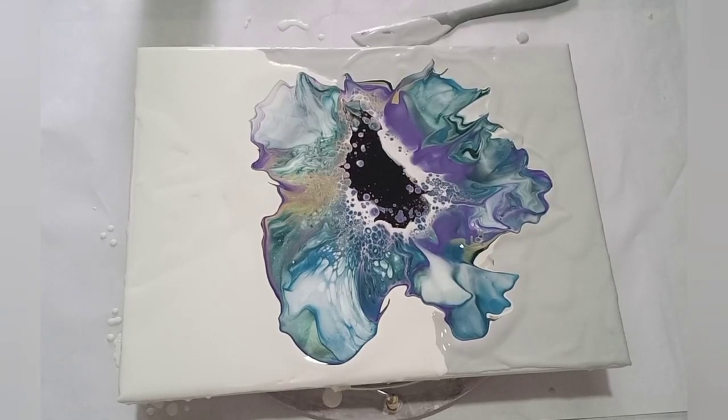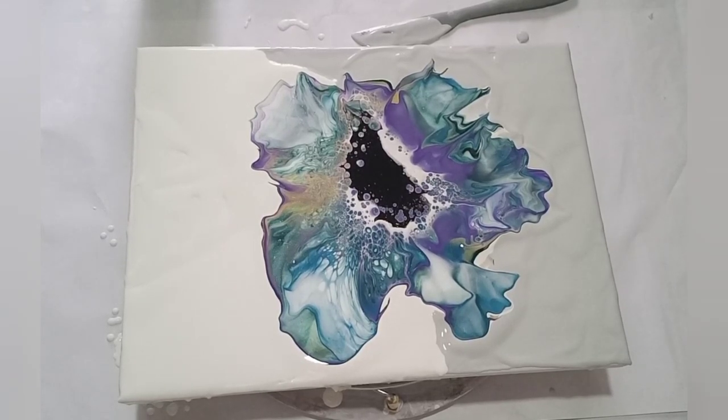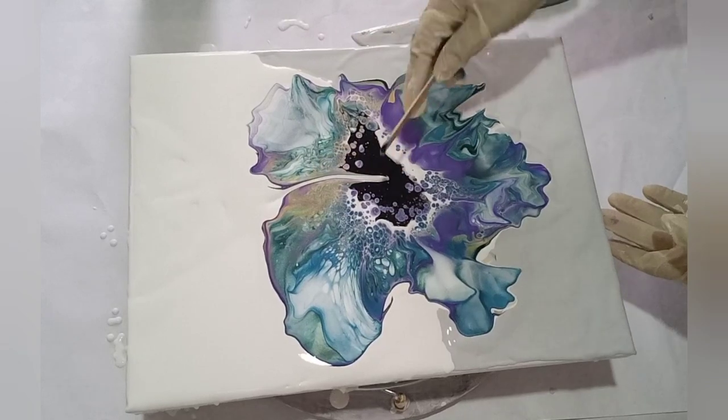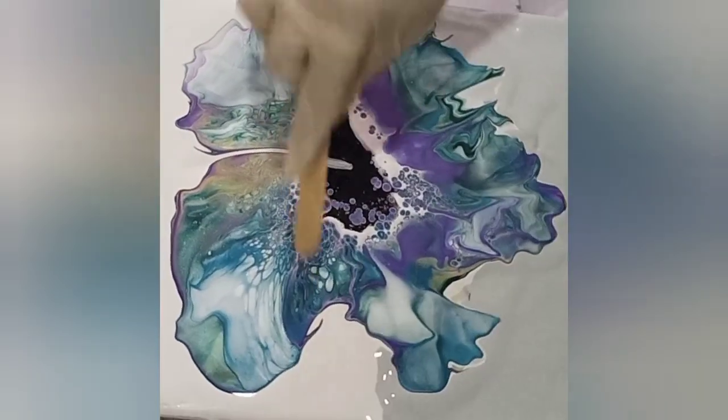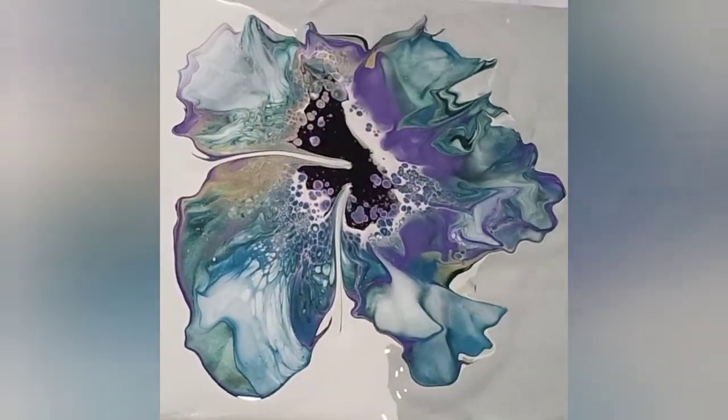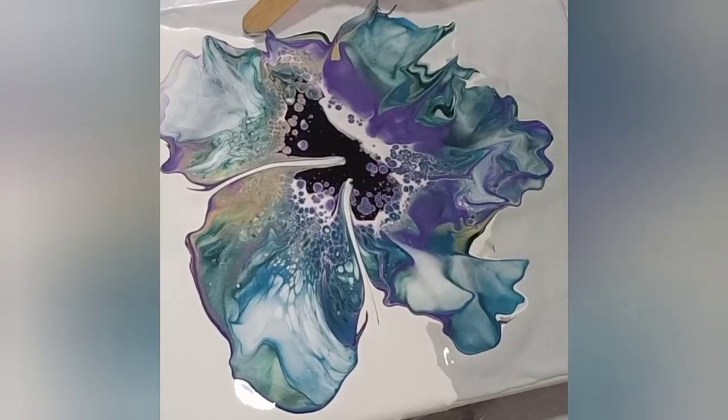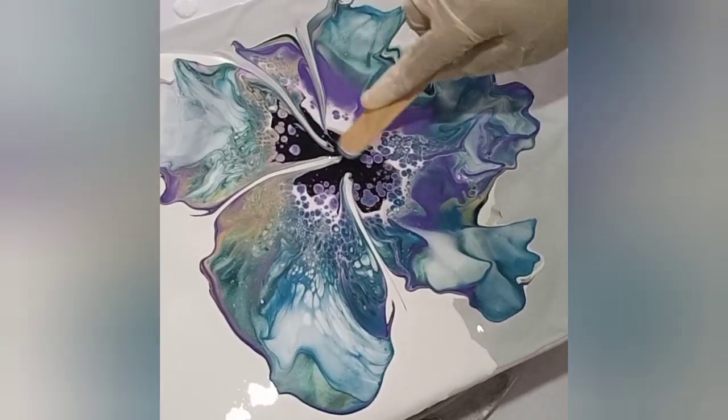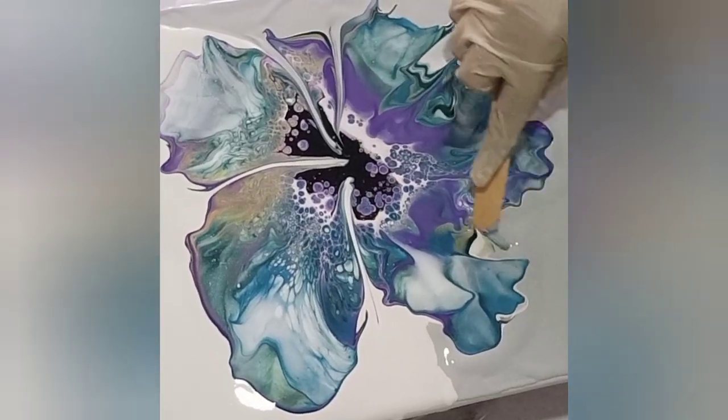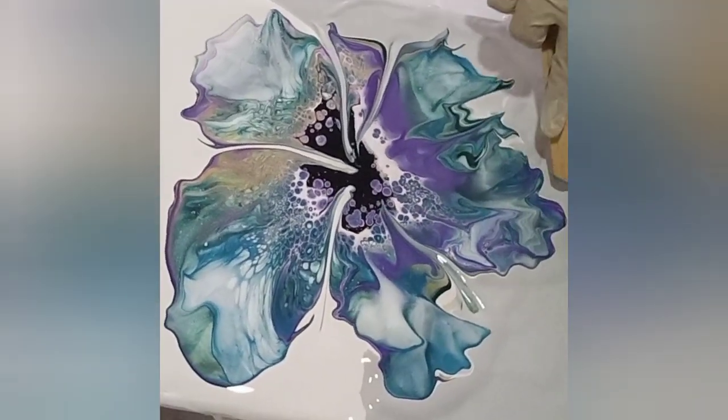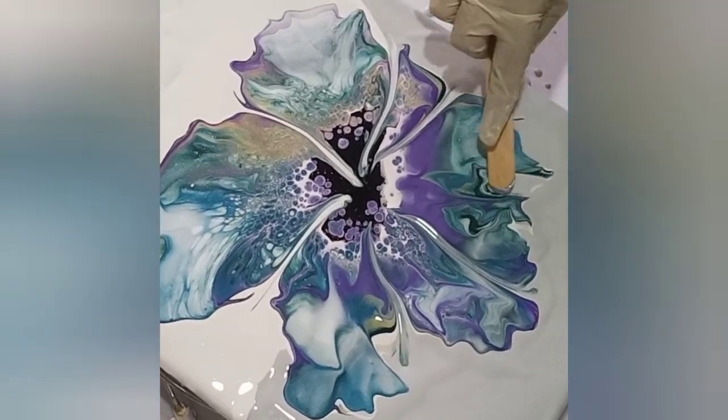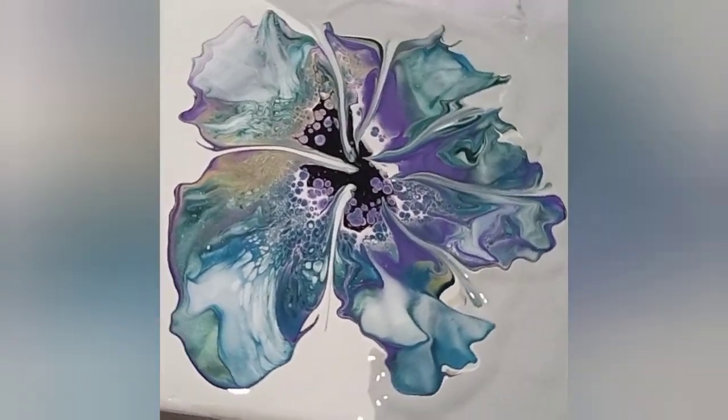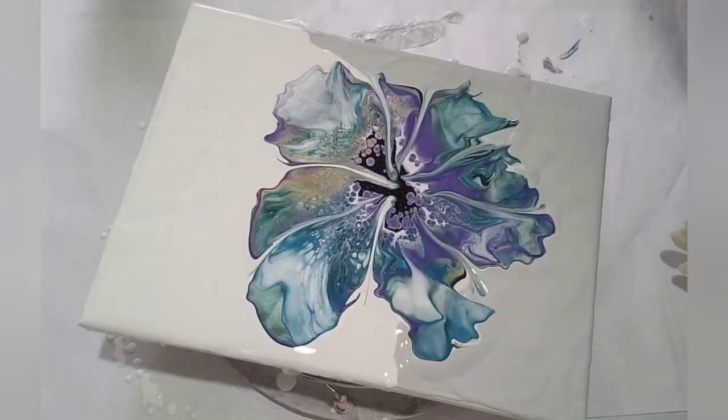I want to pull these petals in to give it some shape. I'm loving the colors. Let's just pull some of these petals in to give it some shape. I'm wiping it clean again, pulling it. Let's give it a spin.